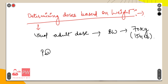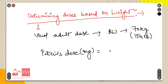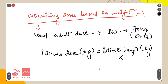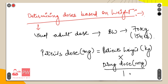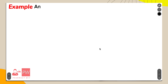Therefore, to determine the dose, multiply the patient's body weight by the dose required. The patient's dose in mg is equal to the patient's weight in kg multiplied by the drug dose in mg per kg.